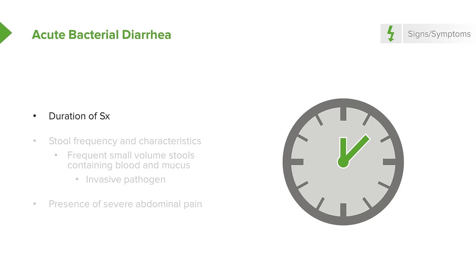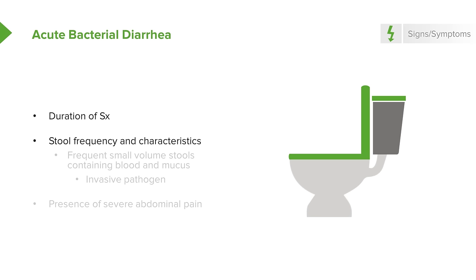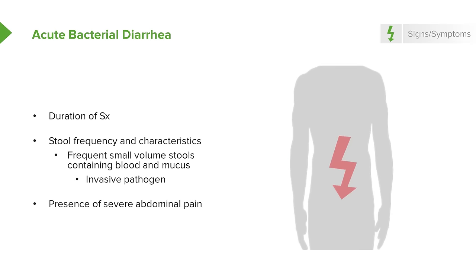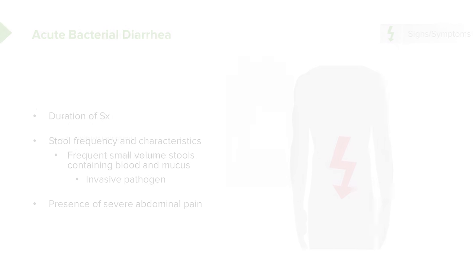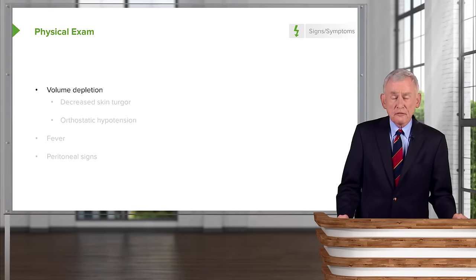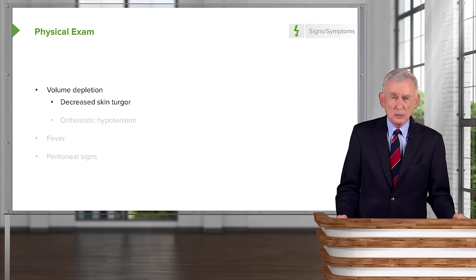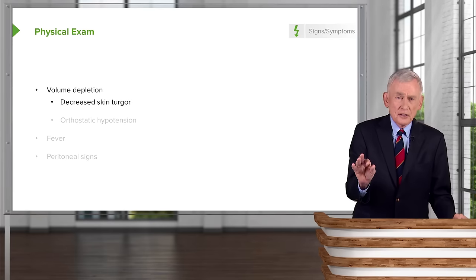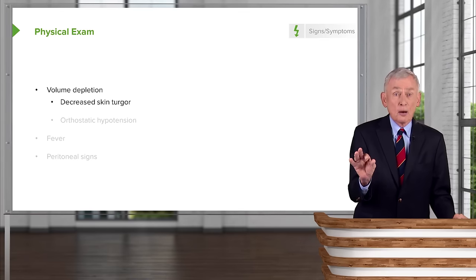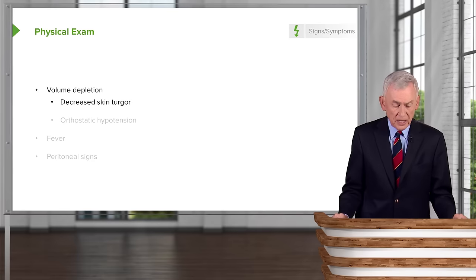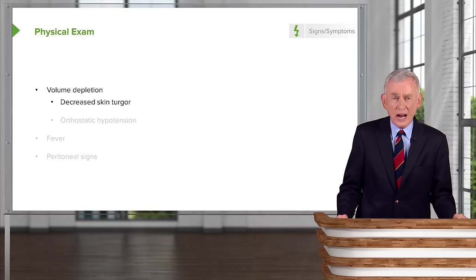We need to know about duration of symptoms, stool frequency, and characteristics. Small volume stools containing blood and mucus suggest an invasive pathogen. We need to know about severe abdominal pain. On physical examination, we look for evidence of volume depletion — for example, decreased skin turgor. You grasp a centimeter of the patient's skin, pinch it gently and see if it stays up; that would be evidence of decreased skin turgor. Check whether the mucous membranes are dry.